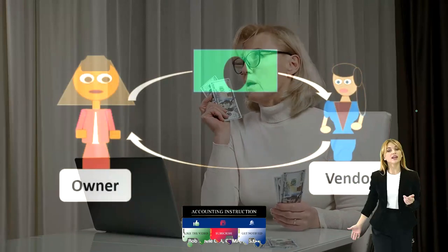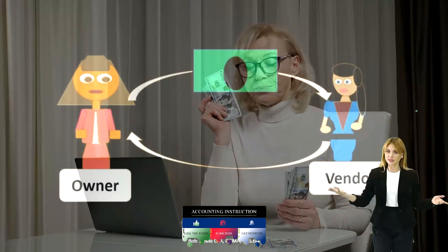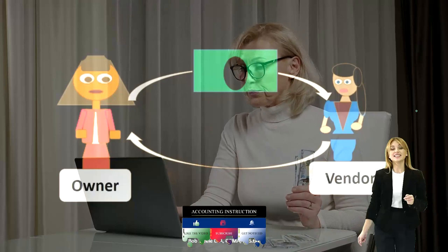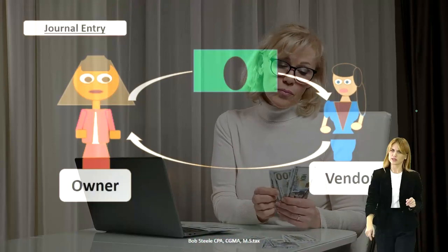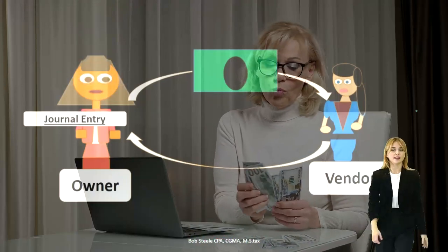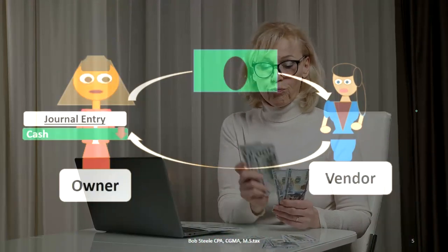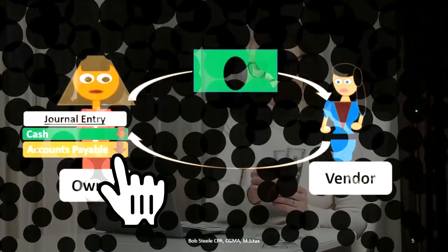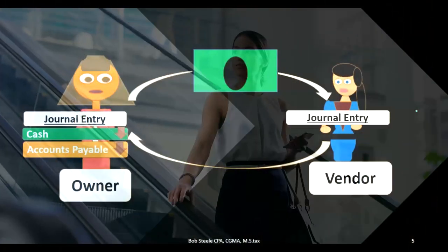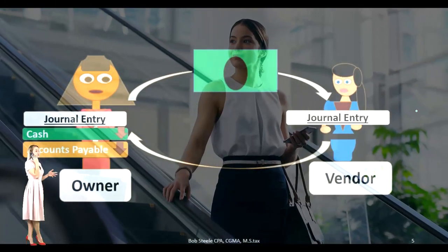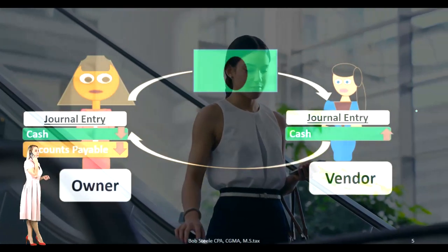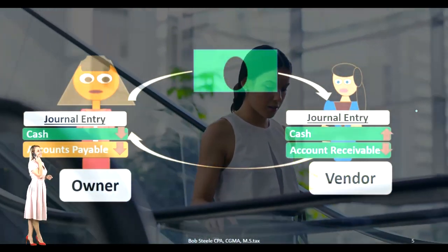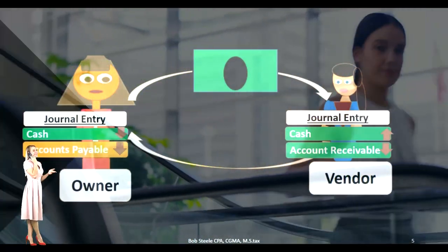Then what's going to happen is the payment will take place at a later point in time, possibly. And that would mean that the journal entry would be that the cash would go down and the accounts payable would go down on the owner's side of things. On the vendor side of things, they would be receiving cash and the accounts receivable would be going down.